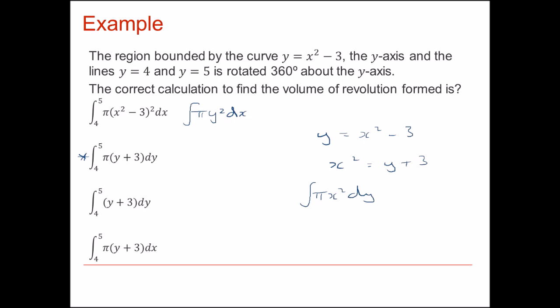The third one down there, certainly the y plus 3 is correct, but what's missing is π. So that should have been π. And in the last one we've got π(y plus 3), but the variable there is written as dx, and it should of course be dy.